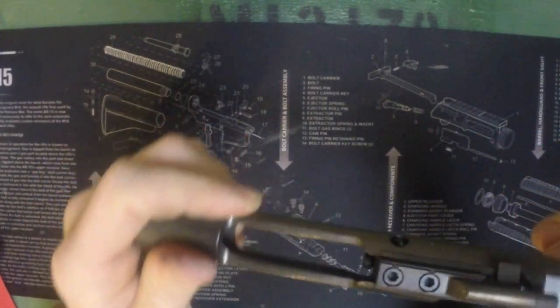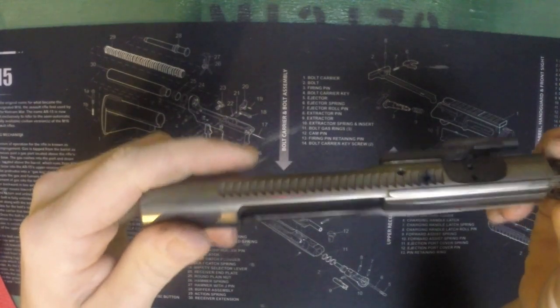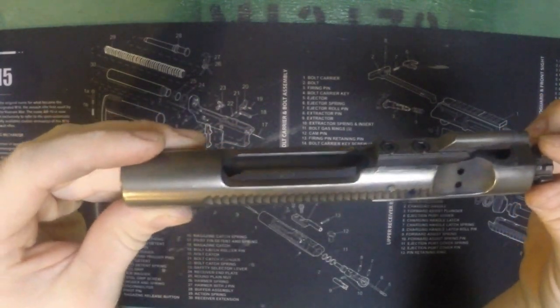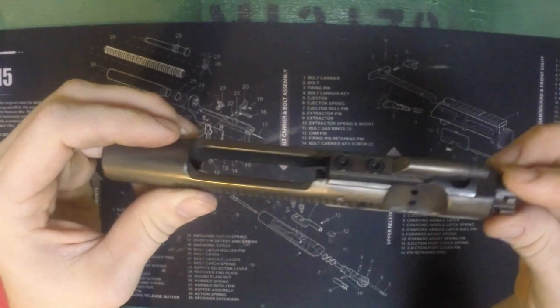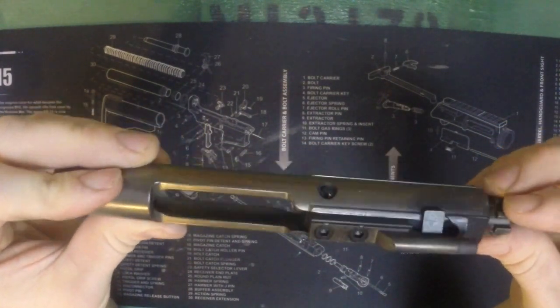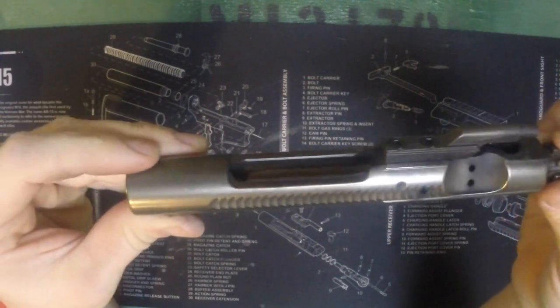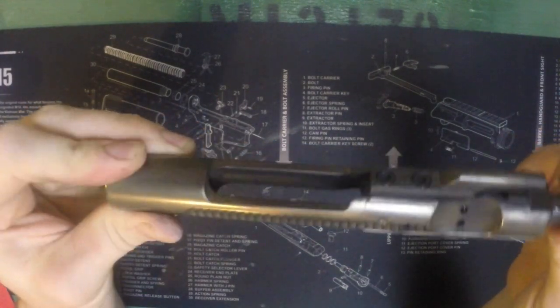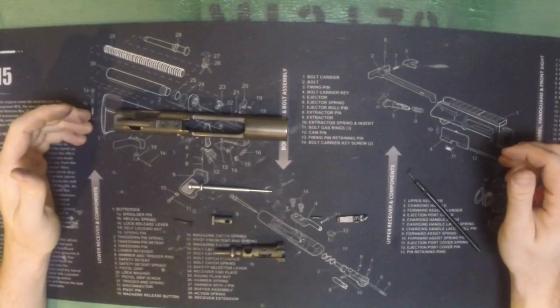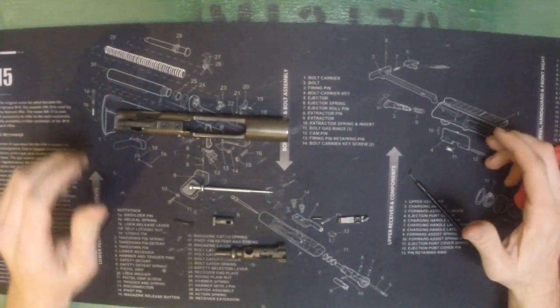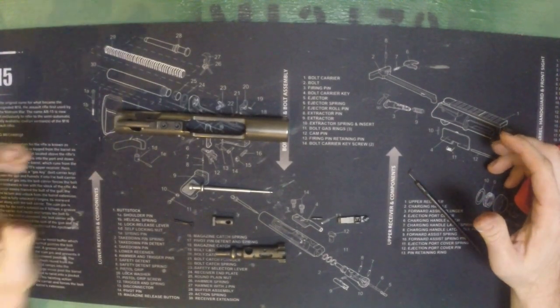We're gonna wipe this bolt carrier group down—I just finished firing it yesterday. We're gonna clean it and then we're gonna bring a little bit of the shine back. We're not gonna polish it like barrel polish or anything like that, just bring some of that nickel boron look back to the bolt carrier group.